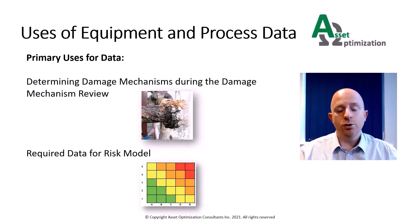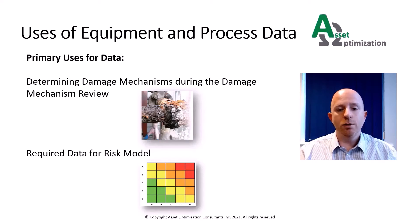There are two customers of this data. Firstly, the corrosion engineer who was part of the damage mechanism review will use this data to determine what damage mechanisms are affecting the equipment in the covered processes. Secondly, the risk analyst will use this data to perform calculations on probability of failure and consequence of failure. A further use for this data could be in the inspection planning stage of the RBI project, where specific elements of the equipment data can be used to determine the most effective inspection plan.